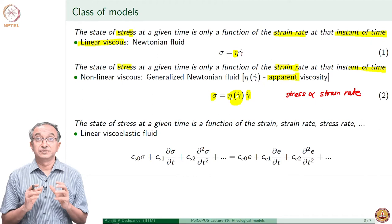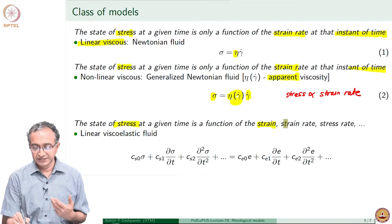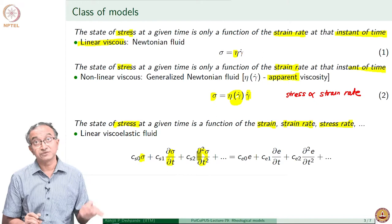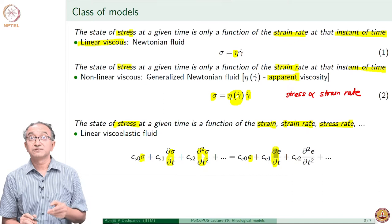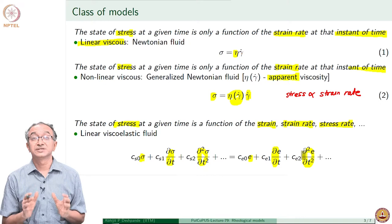The general viscoelastic fluid could be thought of as a material where the state of stress is a function of strain, strain rate, stress rate, and a variety of other derivatives. The most general way we can write this is to say that stress is related to stress rate, rate of change of stress rate, strain, rate of change of strain, rate of change of strain rate, and even higher-order derivatives. This is the most general statement for a linear viscoelastic fluid. If you set selective constants to zero, you can get the Maxwell model, Voigt model, or any such model.